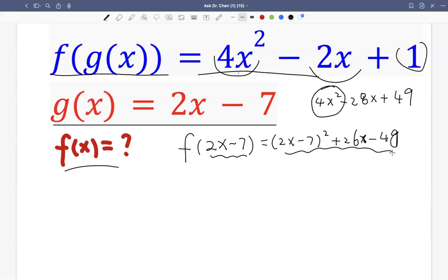So this is still, if we simplify, we still get 4x squared minus 2x plus 1. But now we want to write the x term in terms of 2x minus 7 also. As an input, we want to relate it with the input of f. So 2x minus 7 squared plus, well, let's figure out 13.